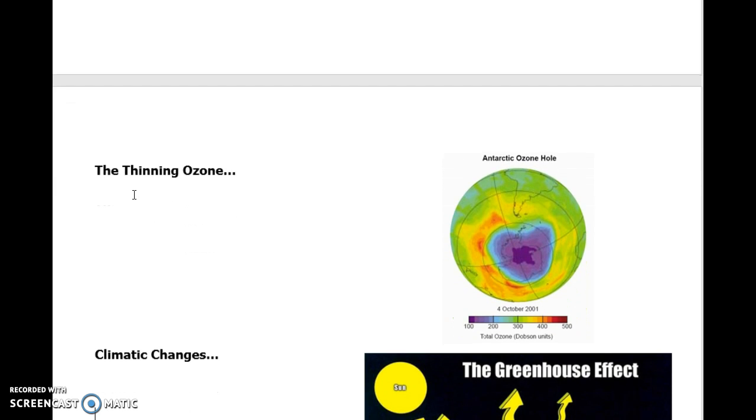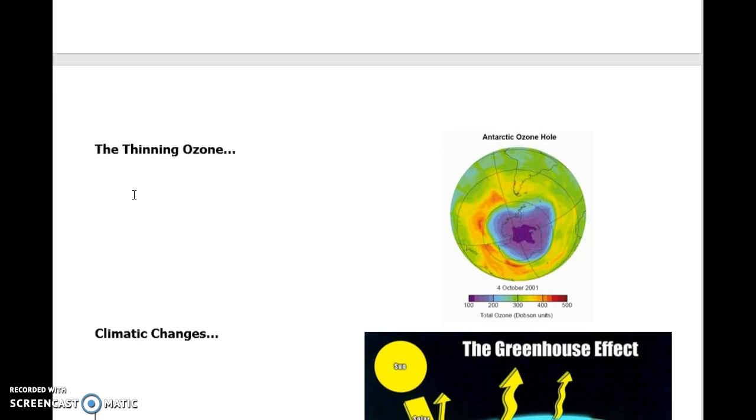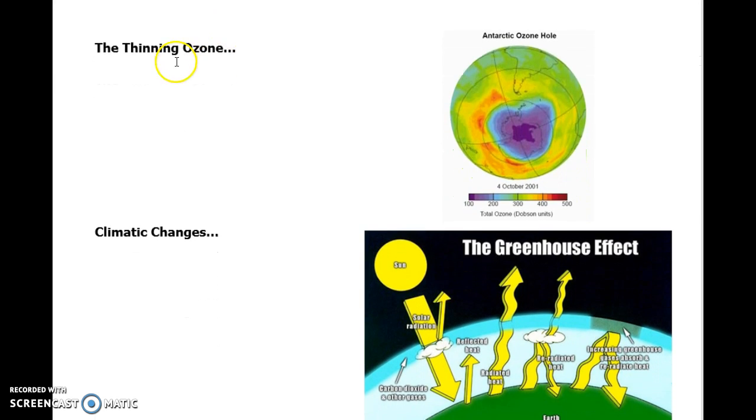The next thing we have here are some environmental things that can affect the people around us. We have the thinning ozone. We probably have a background on the ozone layer. Some students have misconceptions of the ozone layer. They often equate ozone layer with climate change in terms of global warming. The thinning ozone is really not the direct factor that is causing global warming. The ozone layer, which you can see here in this picture, there is an opening in the ozone layer.